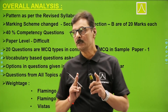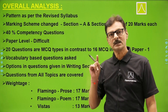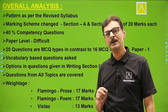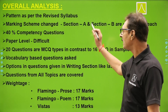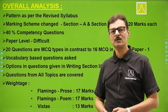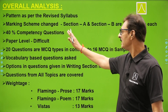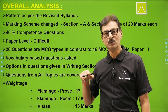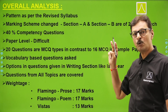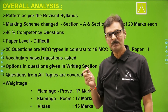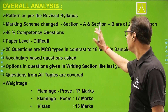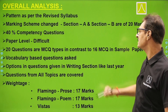The paper overall is not that easy. In the overall analysis: the pattern is as per the revised syllabus with no change in pattern, but the marking scheme has changed for sample paper 2 compared to sample paper 1. In sample paper 1, Section A was 22 marks and Section B was 18 marks — total 40. Now both Section A and Section B are 20 marks each — still total 40 — but the weightage has been redistributed.